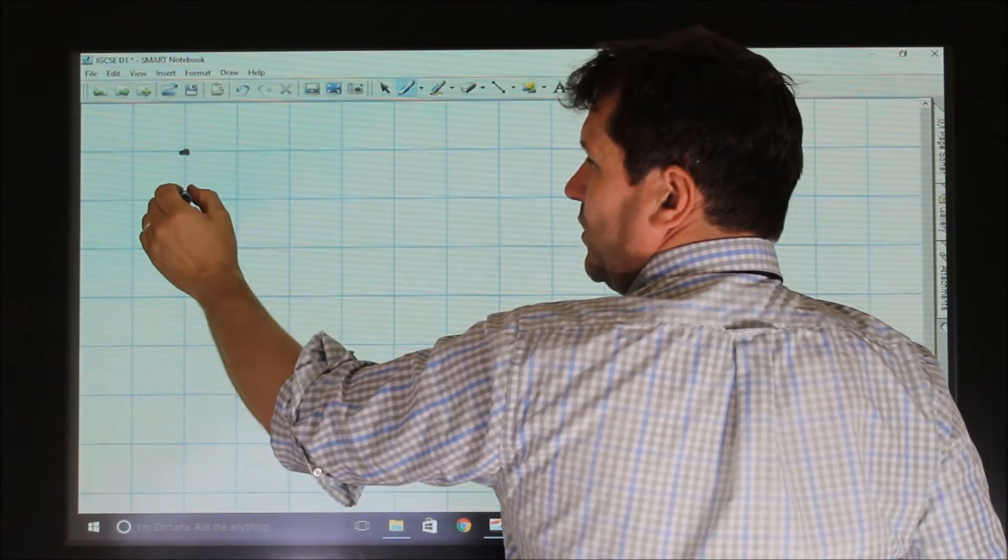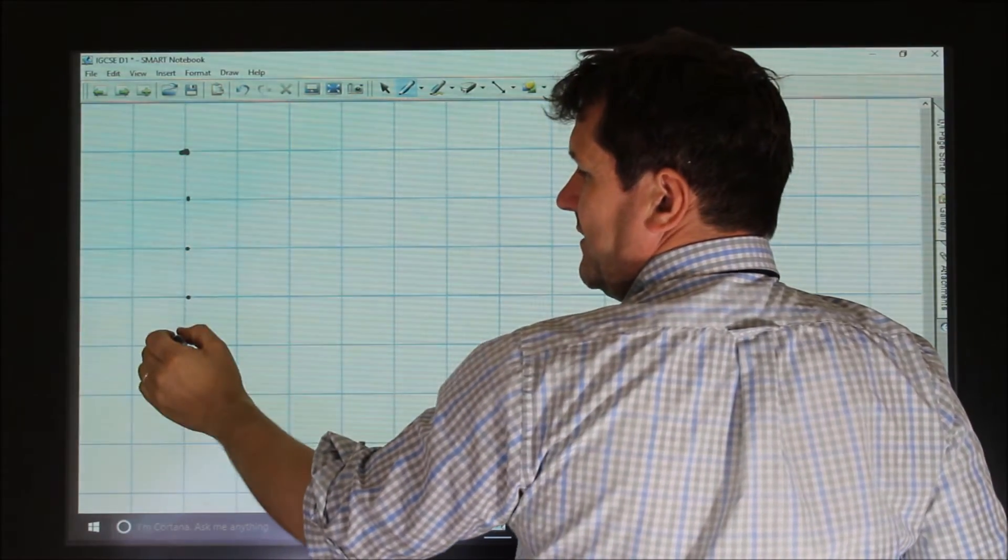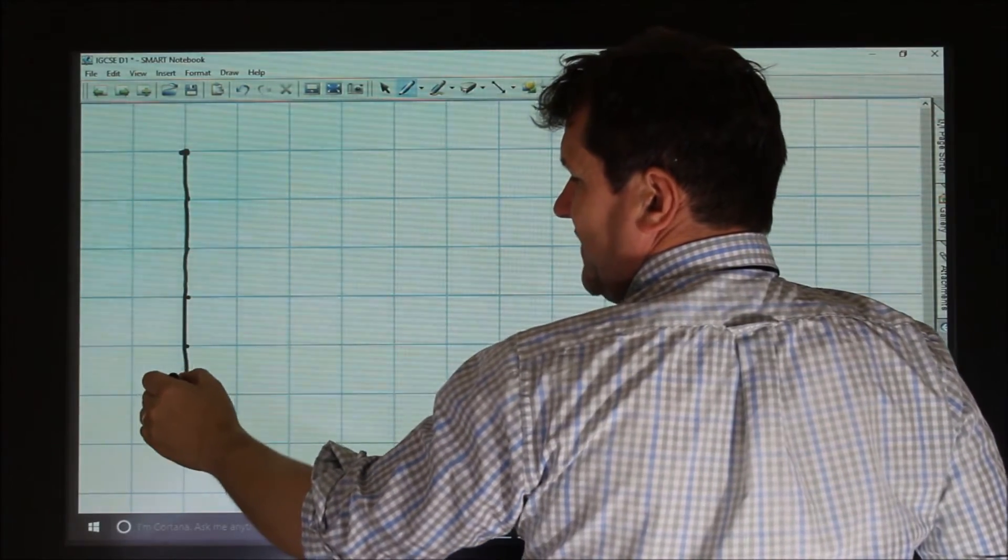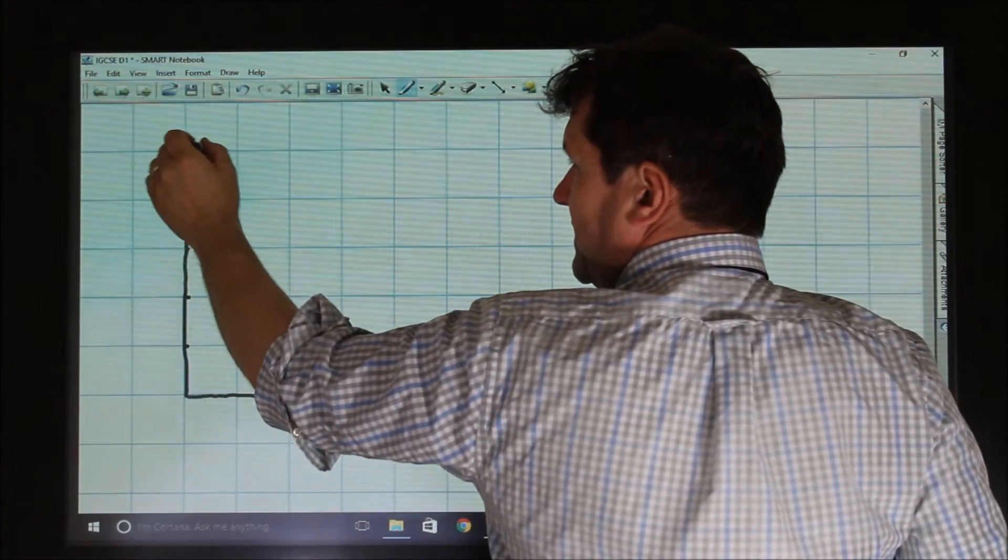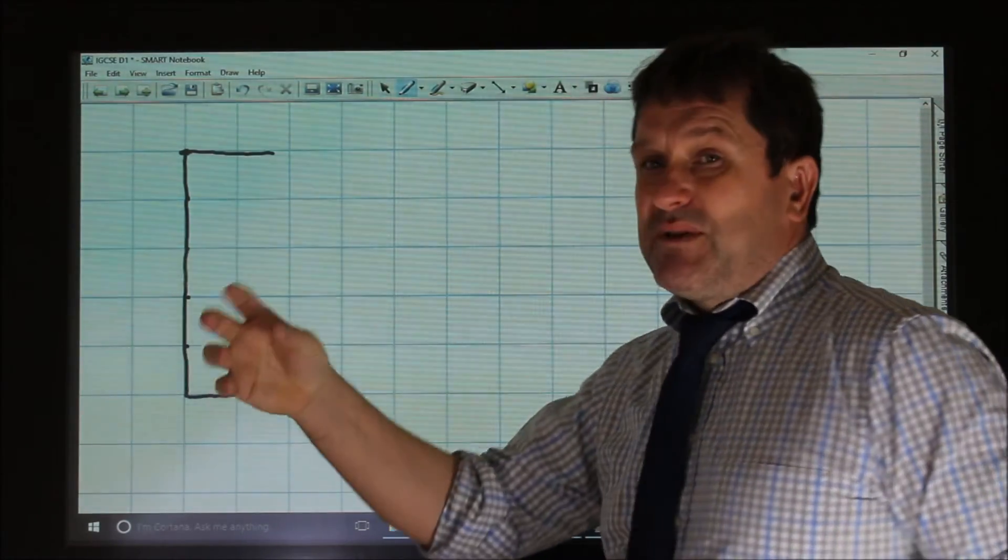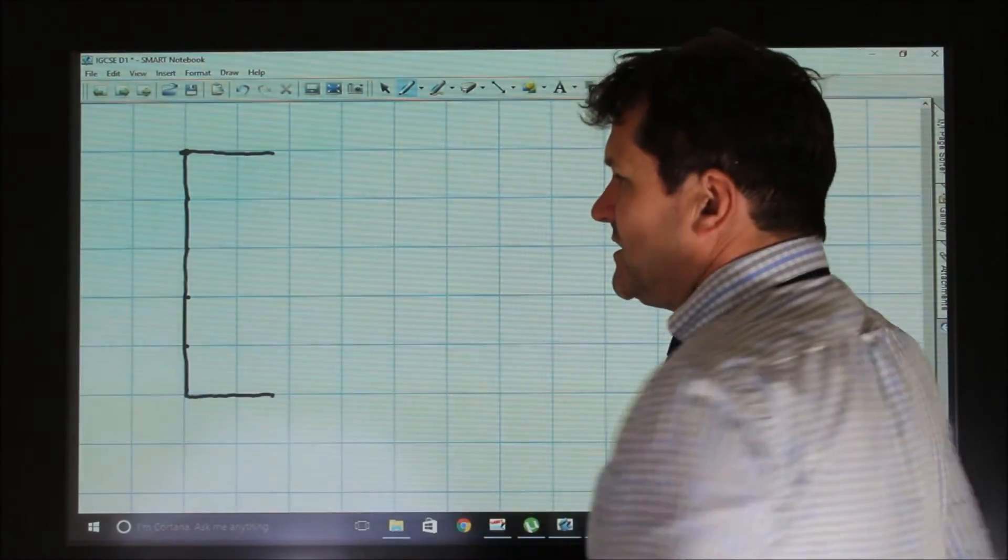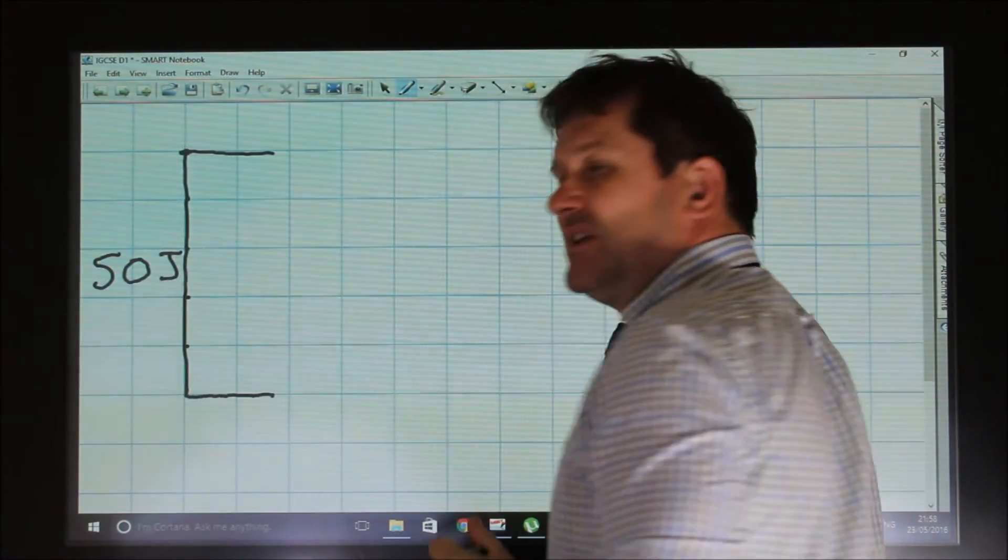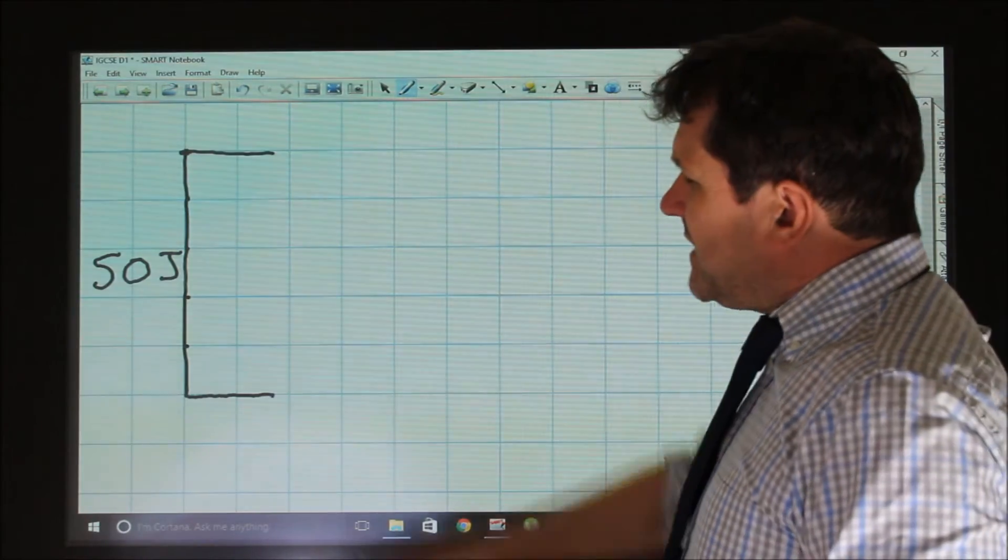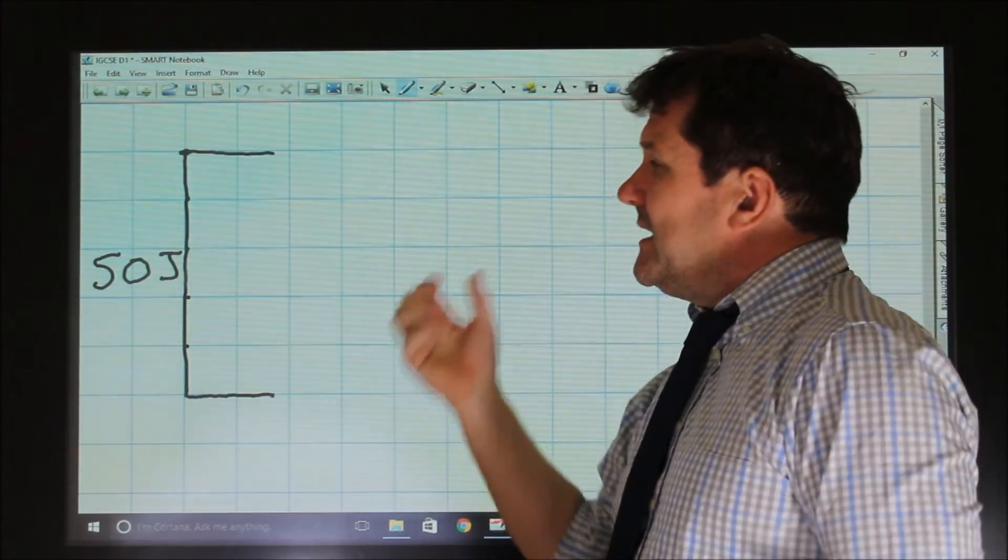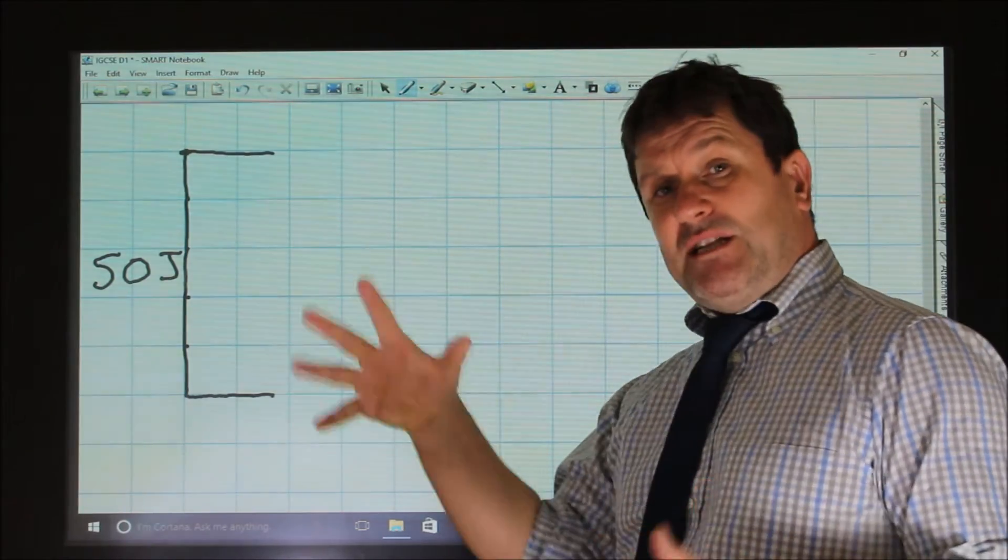how many squares have I got? So 1, 2, 3, 4, 5. So this here, I'm going to use these 5 squares to show 50 joules. So each one of my squares represents 10 joules. So here, I've got 50 joules of electrical energy going into my light bulb. But I need to represent graphically, using the Sankey diagram, how much energy is useful and how much energy is wasted.